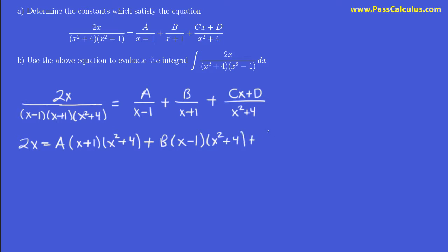And on this last one, I have cx plus d. And I multiply it by x squared plus 4. Sorry, I multiply this entire thing by this entire denominator. The x squared plus 4's cancel. And what's left over is these two factors, x minus 1 and x plus 1.